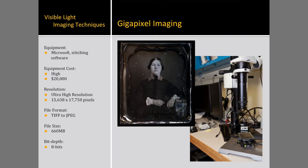A gigapixel image is comprised of 1 billion pixels or more. While modern DSLR cameras generally use a sensor with around 20 million pixels, or 20 megapixels, there are only a couple of cameras to date that are capable of directly imaging a gigapixel image. Most current techniques involve precisely combining high-resolution digital images as a mosaic.